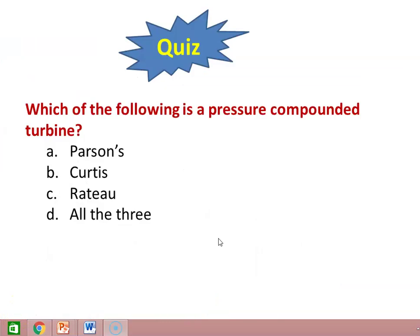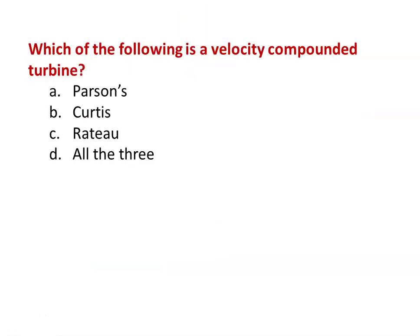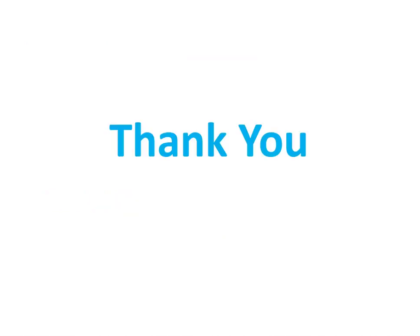Quiz: Which of the following is a pressure compounded turbine? The answer is the Rateau turbine. Which of the following is a velocity compounded turbine — Parsons turbine, Curtis turbine, or Rateau turbine? The answer is the Curtis turbine.